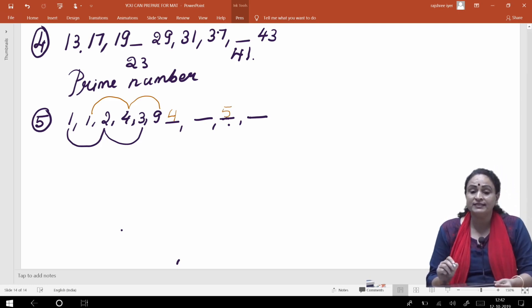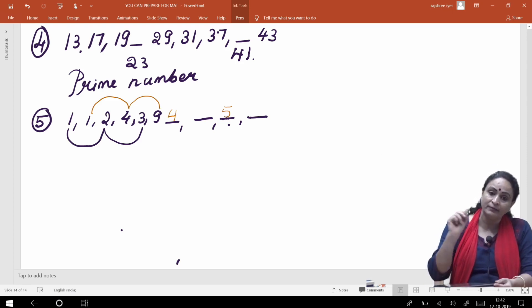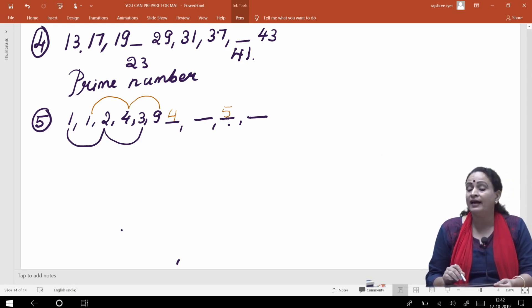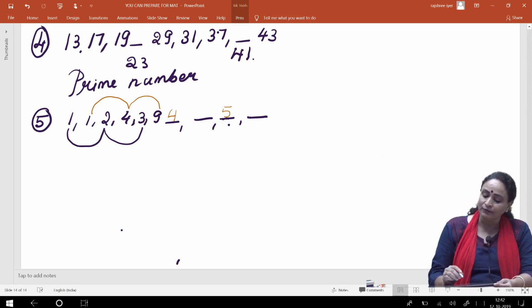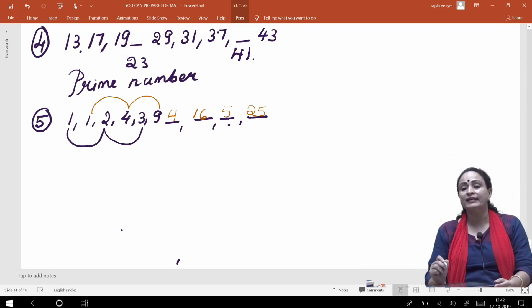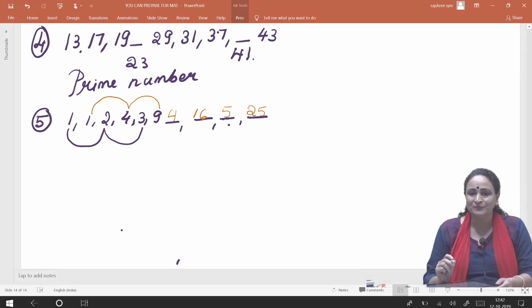Jo agli jo beech-beech ki series, jo even number ke places hai, us pe jo numbers aa raha hai, woh aapki kya aa raha hai? 1 aa raha hai. 1 ke baad kya aaya? 4. Aur 4 ke baad kya aaya? 9. Toh iska matlab hai square of the numbers, 1 ka square 1, 2 ka square 4, 3 ka square 9. Iska matlab 4 ka square hona chahiye, 4 ka square kya ho chahiye, sixteen. Aur iske baad 5 ka square, yani aakhiri wala jo number hoga, woh hoga aapka twenty five. Clear bachcho? Okay.